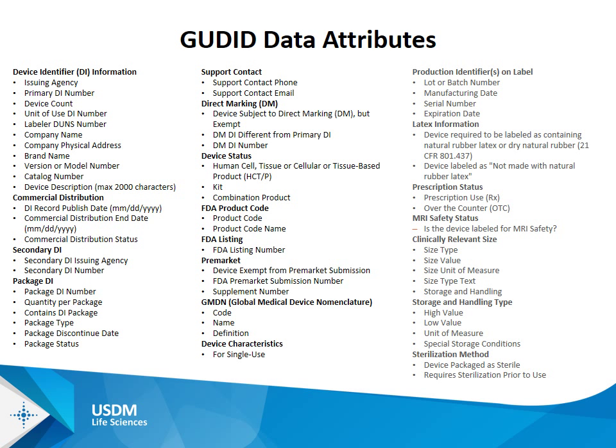One element that changed was the way MRI safety information is presented. The UDI rule does not require that manufacturers label their products as MRI safe or unsafe. But if you do label your products with one of those ASTM-approved MRI statements, you need to reflect that in the database. It used to be a two-part question — is the device labeled for MRI safety, and if yes, provide safe, unsafe, or conditional. It now has changed: there are essentially four elements — MRI safe, unsafe, conditional, or not labeled with MRI safety information.